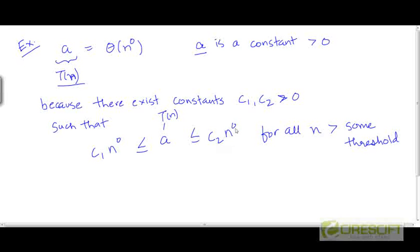Now, n to the power 0 is of course 1. And so you want to prove that there exist constants c1 and c2 such that a is sandwiched between c1 and c2.